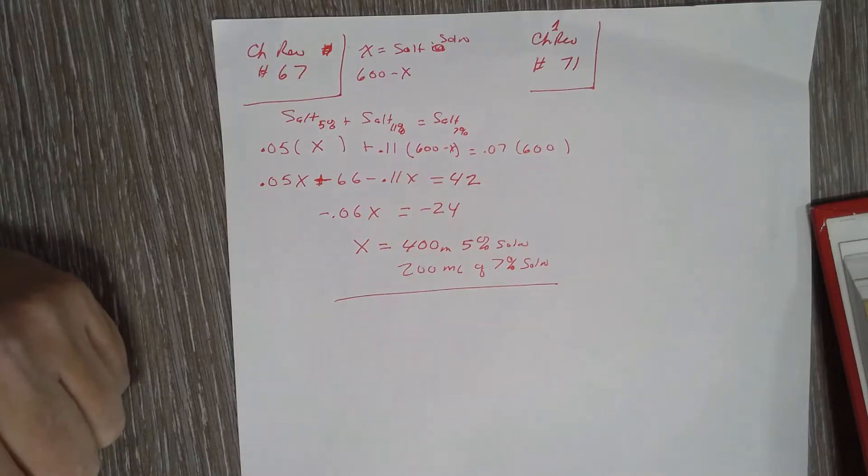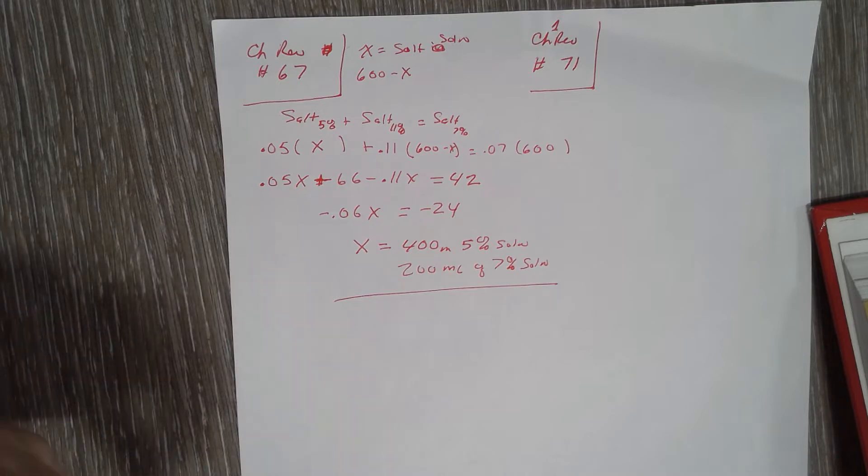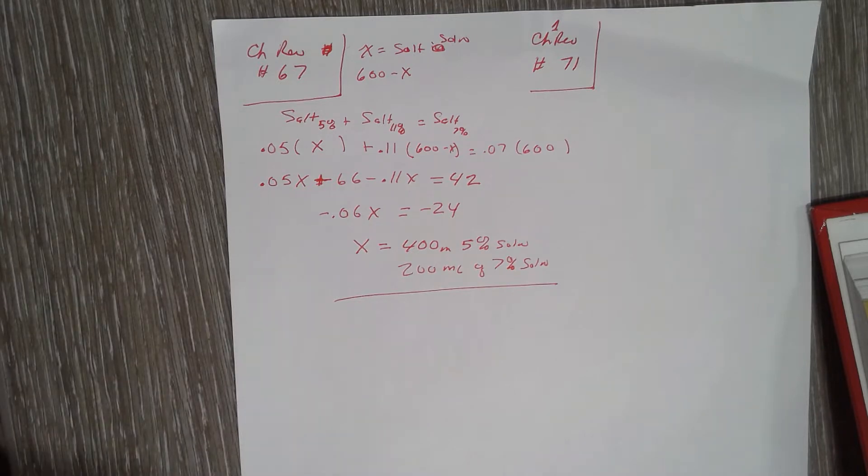Okay, 71 again is a work problem. Work problems are fairly straightforward. They talk about how long it takes multiple entities to do a job individually and then try to figure out how long it would take them together, or it gives you the time together and wants to find their individual times.